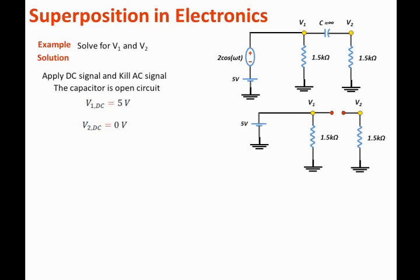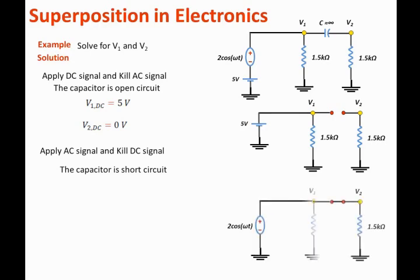And now we will apply the AC signal and we will kill the DC signal. So the circuit becomes AC circuit, and in the AC circuit the capacitor becomes short circuit. So here is the AC circuit, we replace the DC voltage source by short circuit and we replace the capacitor by short circuit.